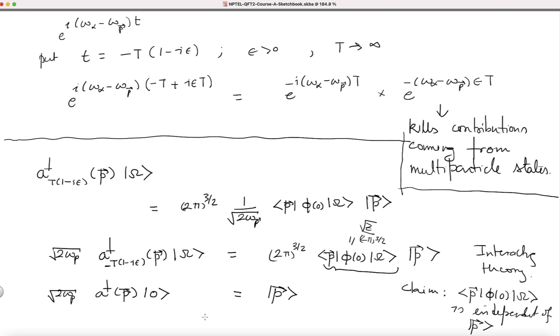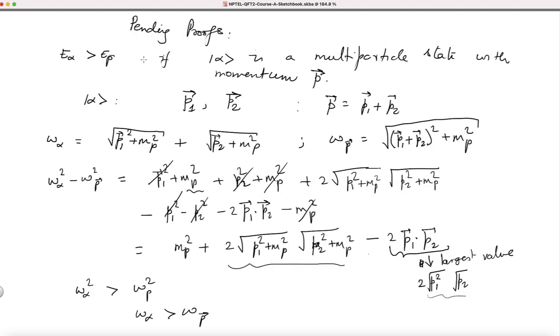That is what we utilized to damp out all multi-particle state contributions. Also note that t is a large negative time, so it is really in the far past. So this a-dagger operator, in the Schrödinger picture, is creating single-particle states in the far past. One of the pending proofs is done; the next one is also easy.